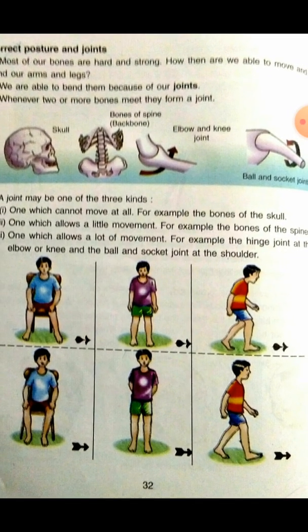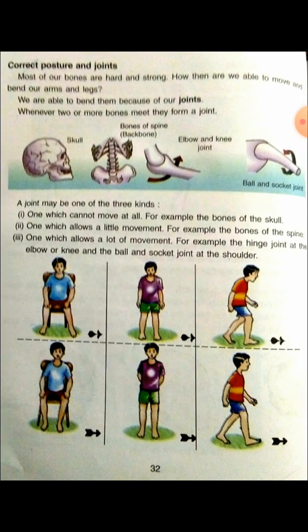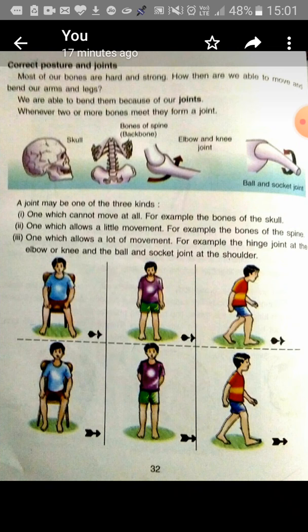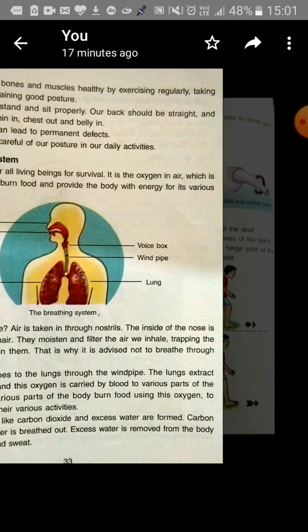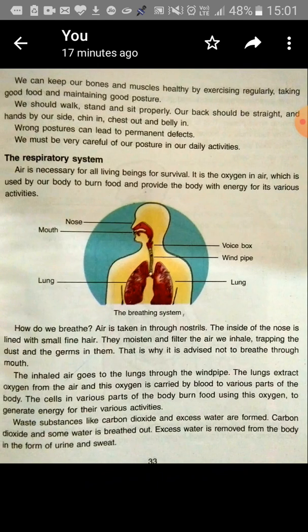Then joints — there are three kinds of joints — so that we are able to move our body. Then the respiratory system: what are the parts of the respiratory system? Nose, mouth, lungs, voice box, and windpipe.